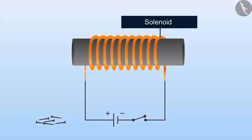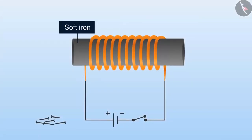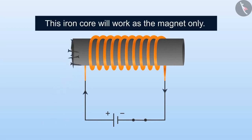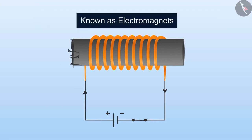If we put a soft iron core in the solenoid and turn on the electricity, then this iron core will work as a magnet. The magnets formed with the help of electricity are known as electromagnets.